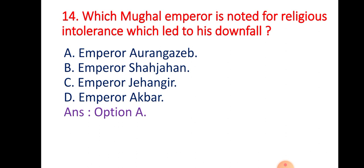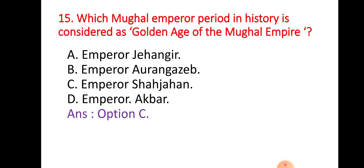Question 14: Which Mughal emperor is noted for his religious intolerance policy, which led to the downfall of the empire? Option A: Emperor Aurangzeb; Option B: Emperor Shahjahan; Option C: Emperor Jahangir; Option D: Emperor Akbar. The right answer is Option A — Emperor Aurangzeb.